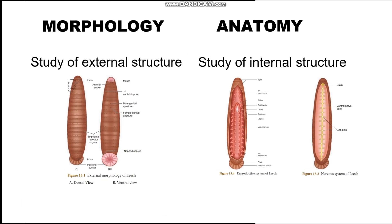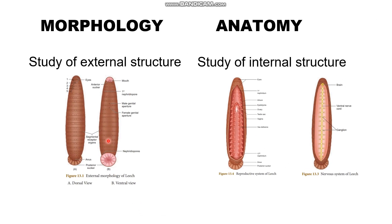In these terms, we will study morphology and anatomy. Morphology — 'logi' means study — so morphology means the study of external structure. In the diagram, we will look at the leech in dorsal view and ventral view. Looking at the outside — eyes, mouth, suckers — that is called morphology, the study of external structure.